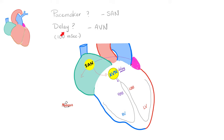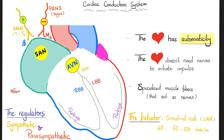How long is the AV nodal delay? 100 milliseconds. That may not sound like much, but when it comes to impulses, that is like an eternity. The pathway: SA node → atria → AV node → bundle of His → right and left bundle branches → right and left ventricles via Purkinje fibers — the His-Purkinje system. The SA node fires about 60 times per minute, and that is your heart rate. If yours fires 100 times per minute, your heart rate is 100 beats per minute.